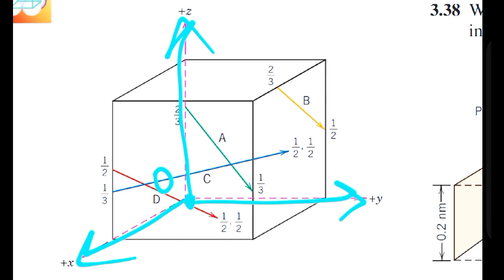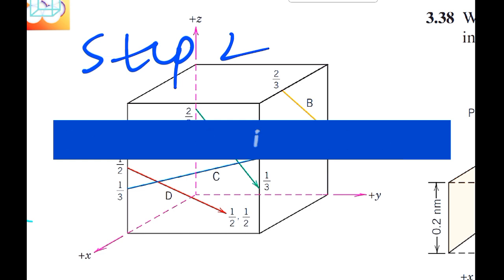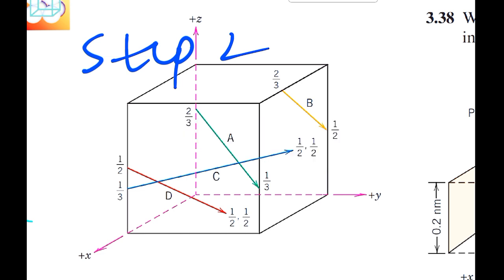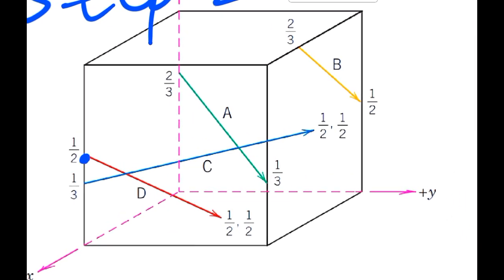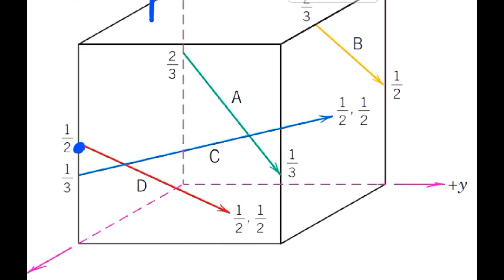Whether the coordinate system is predefined or not, you have to acknowledge what that coordinate system is. Step two is to find out the tail coordinates. You should know where the tail is — the tail is located here and the head is located here. By tail coordinates, we mean starting from the origin, how much we have to move along x, y, and z direction in order to reach the tail point.